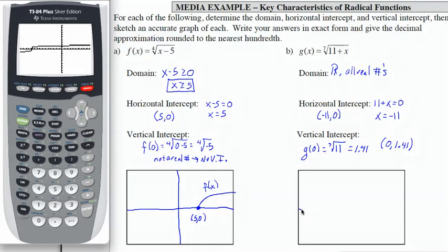So what we have then, if we draw our horizontal and vertical axis, so we have a graph that comes up like this and increases there. It's going to cross the horizontal at negative 11 comma 0. It crosses the vertical at 0 comma 1.41. And this is our function g of x.